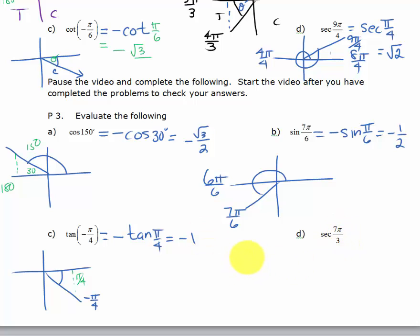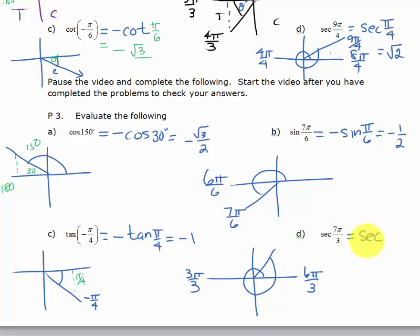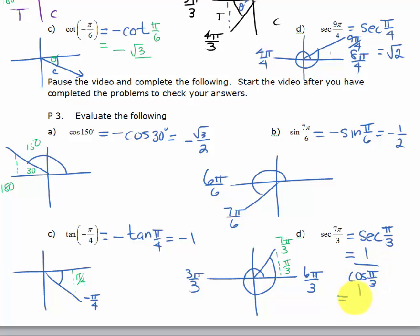Last one: the secant of 7π/3. I'm going to draw 7π/3 — 3π/3 is π, so 6π/3 is 2π. When I draw 7π/3, that brings me to the first quadrant — all trig functions are positive there. So I'm going to have a positive secant of whatever my reference angle is. If this is 7π/3 and this is 6π/3, my reference angle is π/3. The secant of π/3 is 1 over the cosine of π/3. The cosine of π/3 is 1/2, so we have 1 divided by 1/2, which is 2. The answer is positive 2 because we're in the first quadrant.